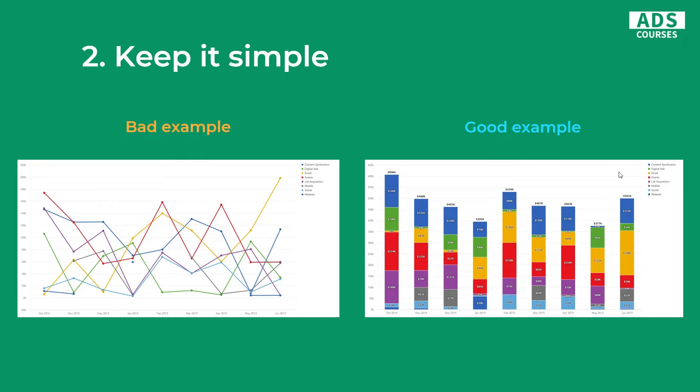The second tip is to keep it simple. Sometimes it's not easy to keep it simple because of how much data you actually need to show, but still you can simplify it. In this bad example — which is actually the most common mistake that I see — it's completely chaotic and completely unreadable. On the right, we've got a better example of visualizing the same data — this is actually traffic source. There is still a lot of data, but it's easier to read and we can actually make conclusions from this chart. Even if you have a lot of data, a lot of dimensions and metrics, you can make it simpler with proper data visualization.